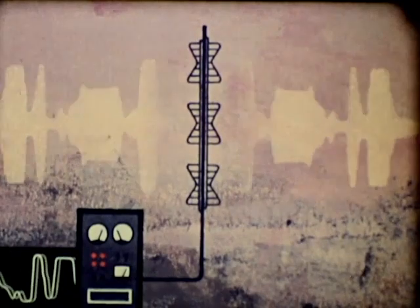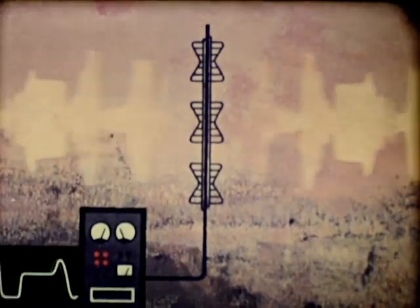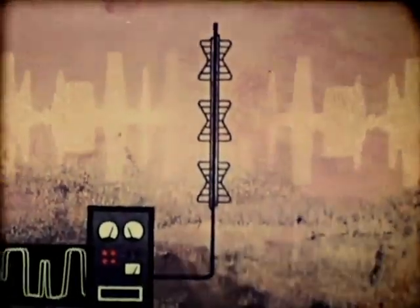In other words, the strength of the carrier wave is changed by variations in the strength of the picture signal. This is called amplitude modulation. And in this way, all the nuances of the television picture are transmitted together with the carrier wave.